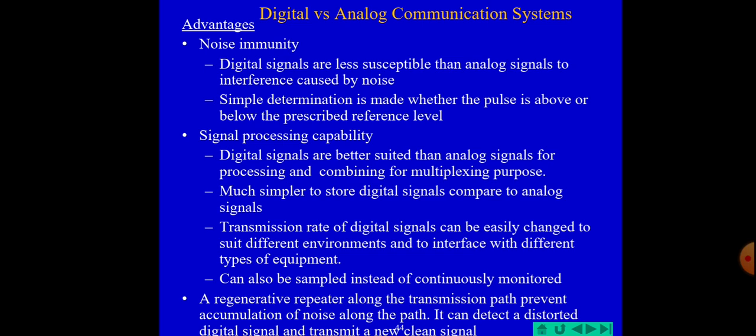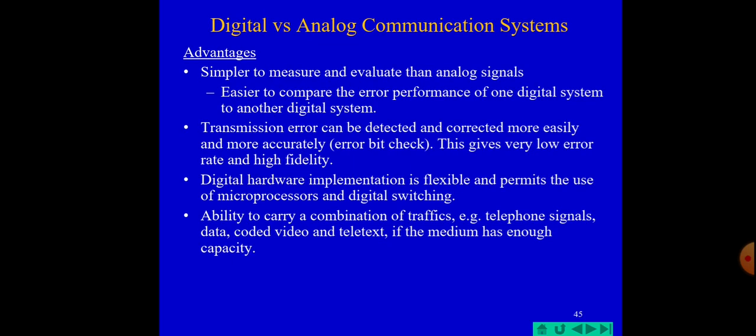A regenerative repeater along the transmission path prevents the accumulation of noise along the path. It can detect distorted digital signals and retransmit a new clean signal. Digital signals are simpler to measure and evaluate than analog signals. It is easier to compare the error performance of one digital system to another. Transmission errors can be detected and corrected more easily and more accurately, giving very low error rates and high fidelity. Digital hardware implementation is flexible and permits the use of microprocessors and digital switching.